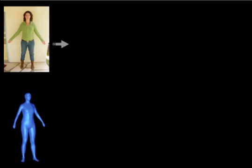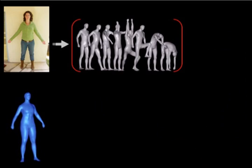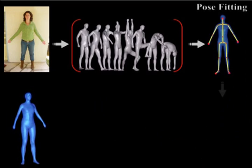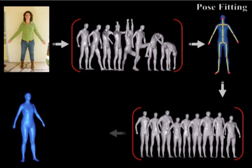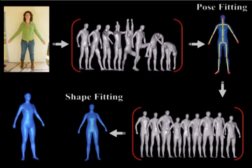To parametrize the human shape, we integrate a 3D whole-body morphable model into the reshaping process. This requires us to address a view-dependent fitting problem, for which we use a two-step procedure: first pose fitting and then shape fitting.